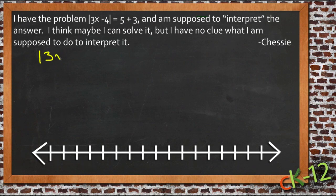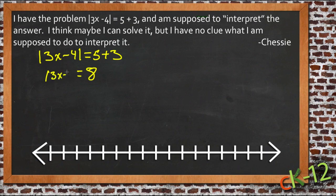So we have 3x minus 4 equals 5 plus 3. First thing I'm going to do right away is just go ahead and combine those two numbers on the right, because that's a pretty simple simplification, and it'll make things just a little easier to write down. So we have the absolute value of 3x minus 4 equals 8.